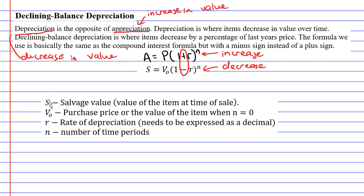A little bit about terminology: S stands for the salvage value, which is the value of the item at the time of sale. If you have a car and five years later you sell the car, that is your salvage value—what you sold it for five years later.